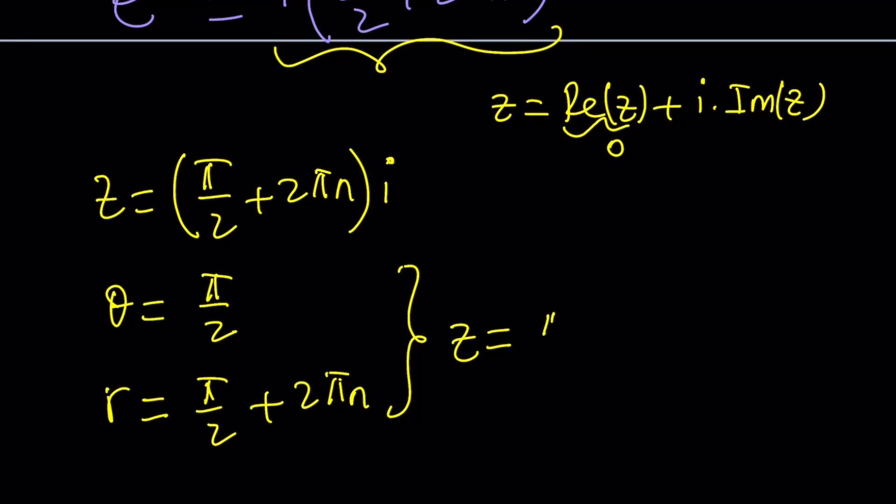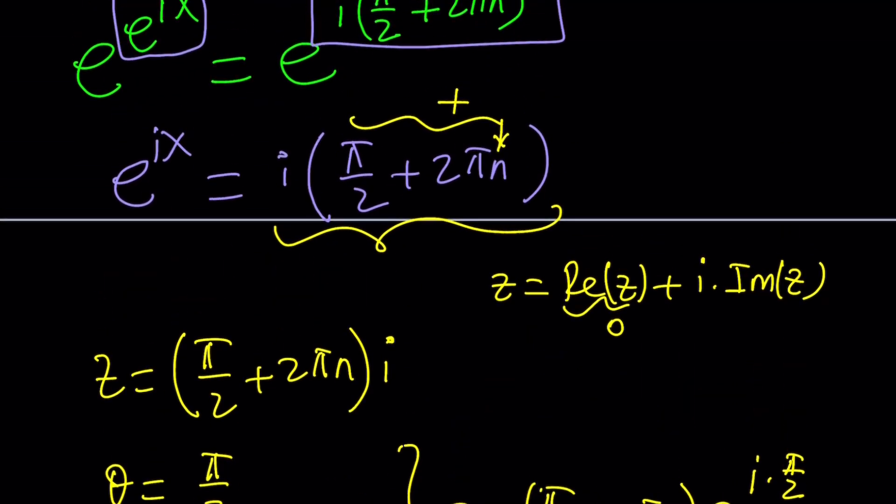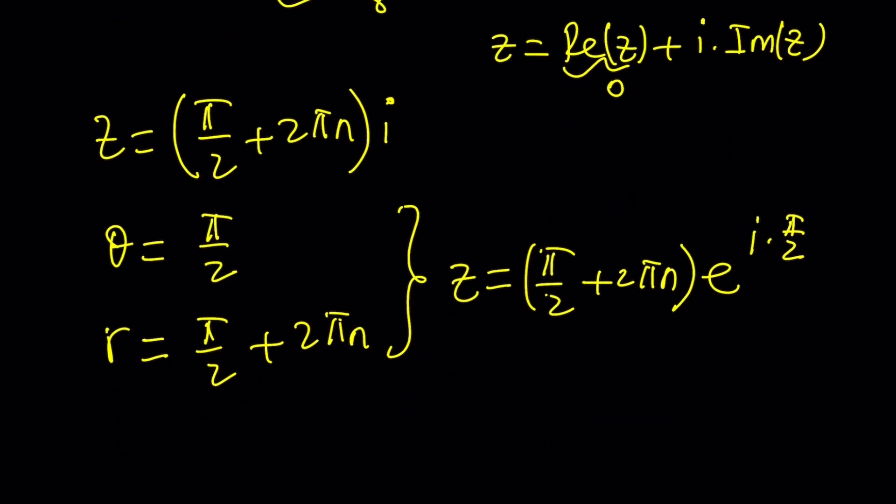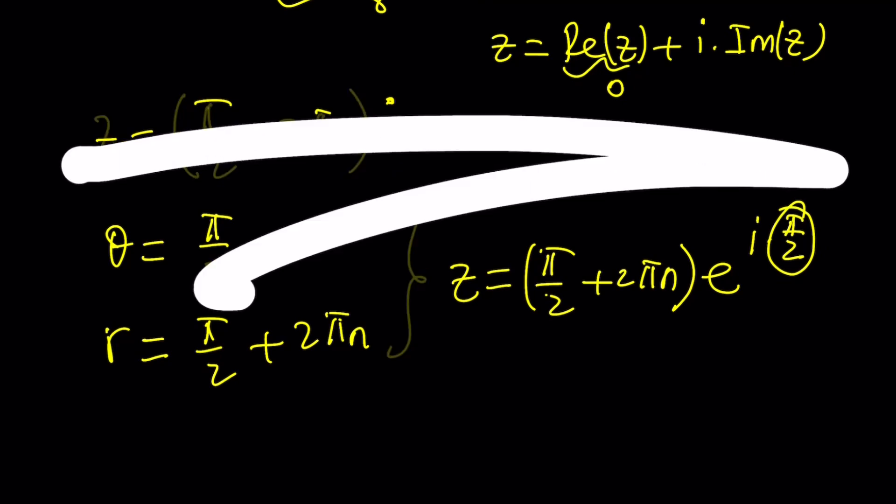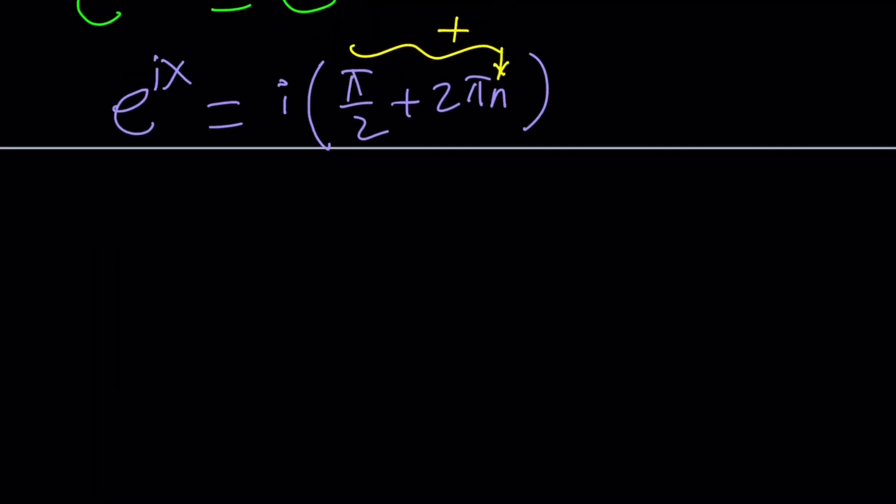The modulus times e to the power i times π over 2. But notice that we already used n as an integer. So we're going to use a different integer here. So here's the thing. Let's go ahead and clear this all up and start fresh. Okay, so here's what we're going to do. We're going to write this as e to the power i times, and of course I have to write the modulus first, right?